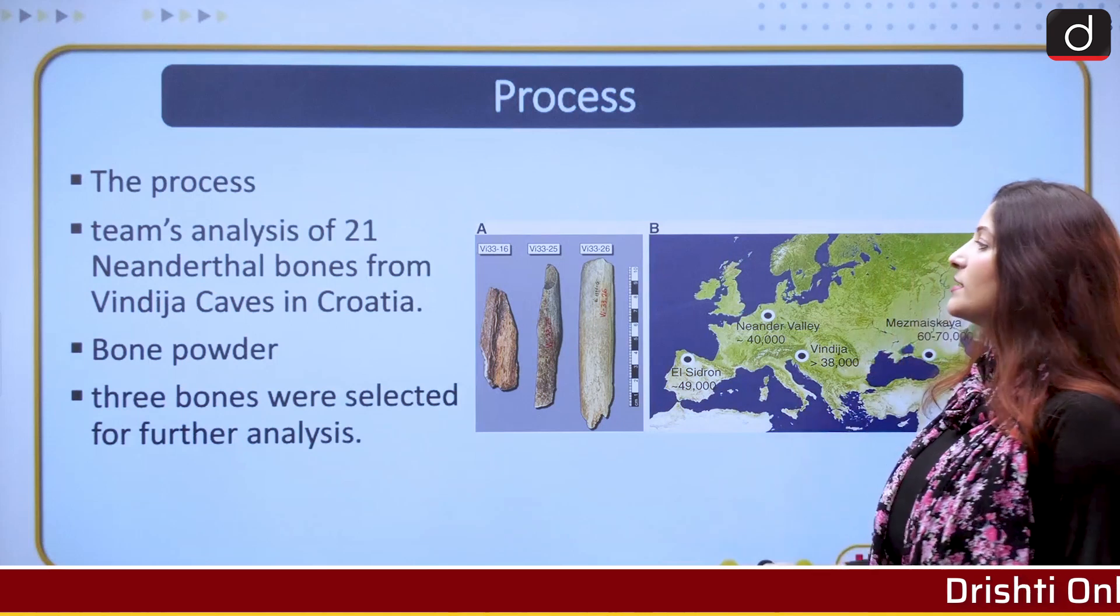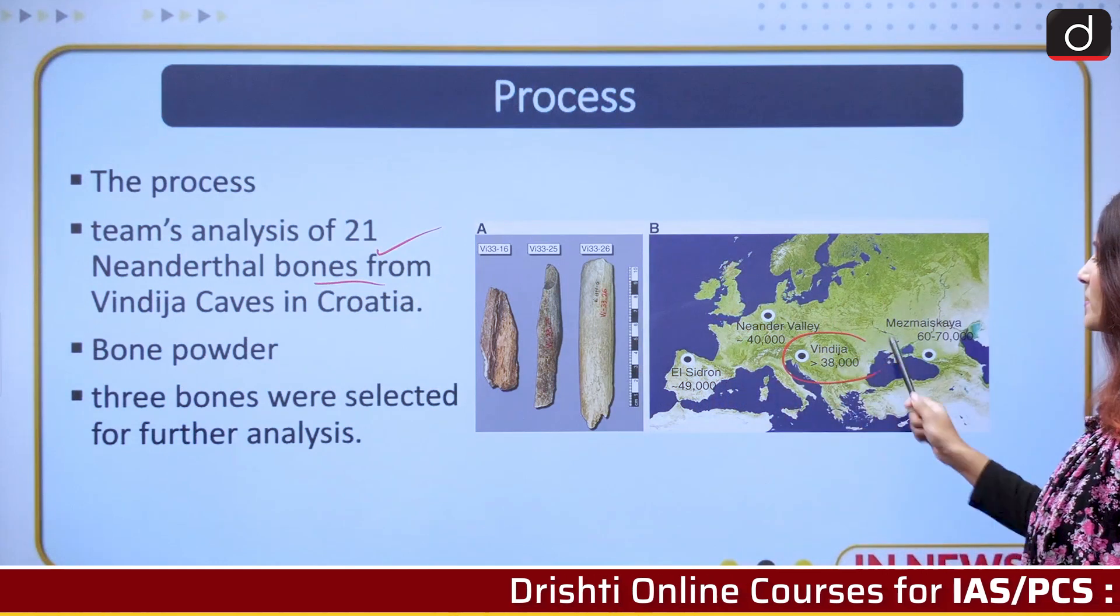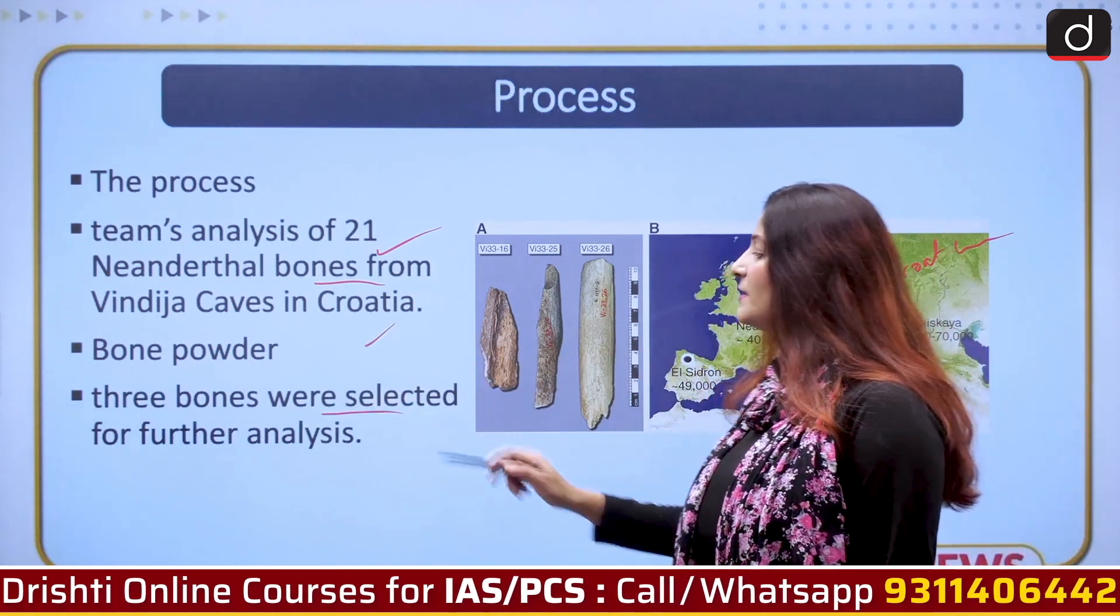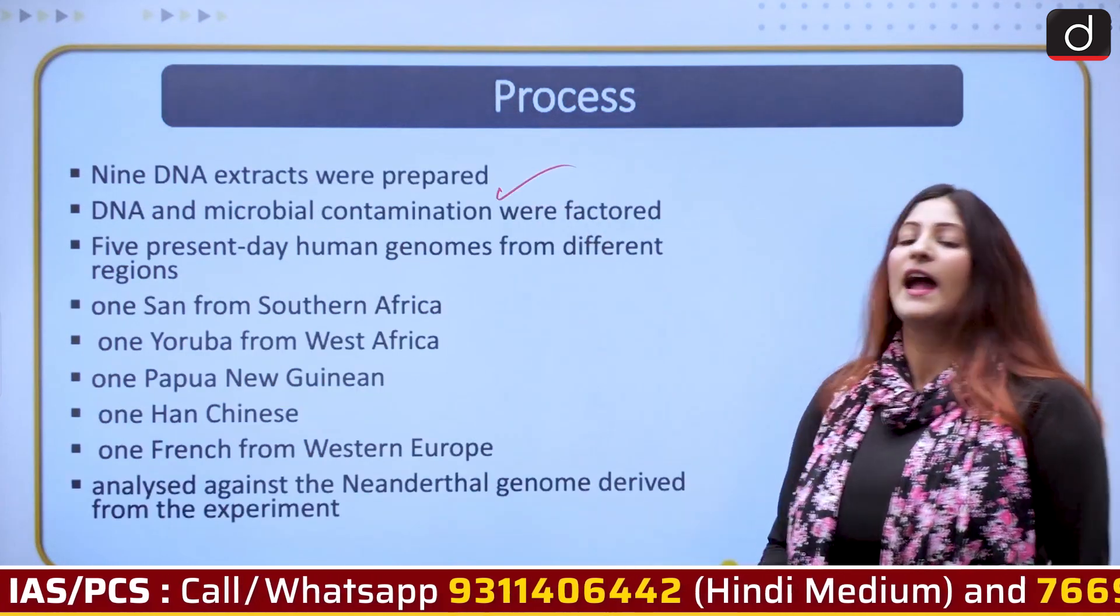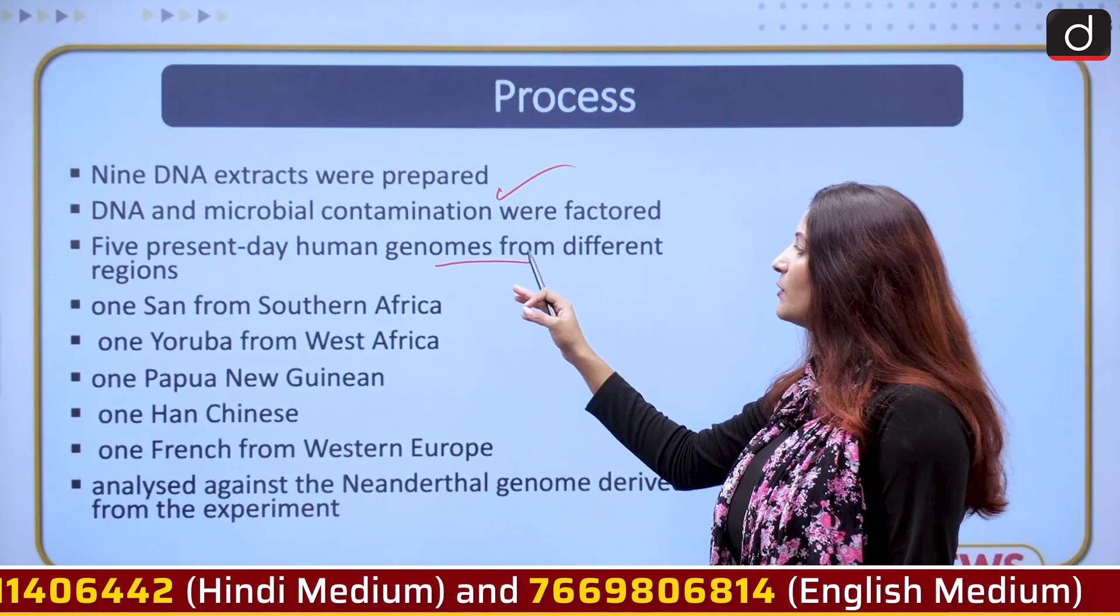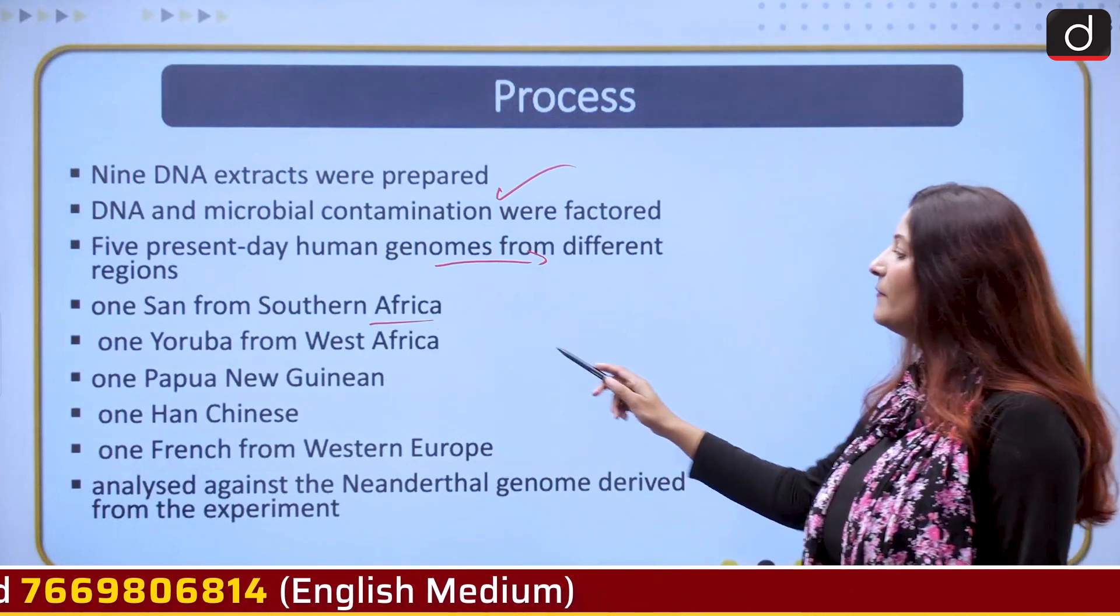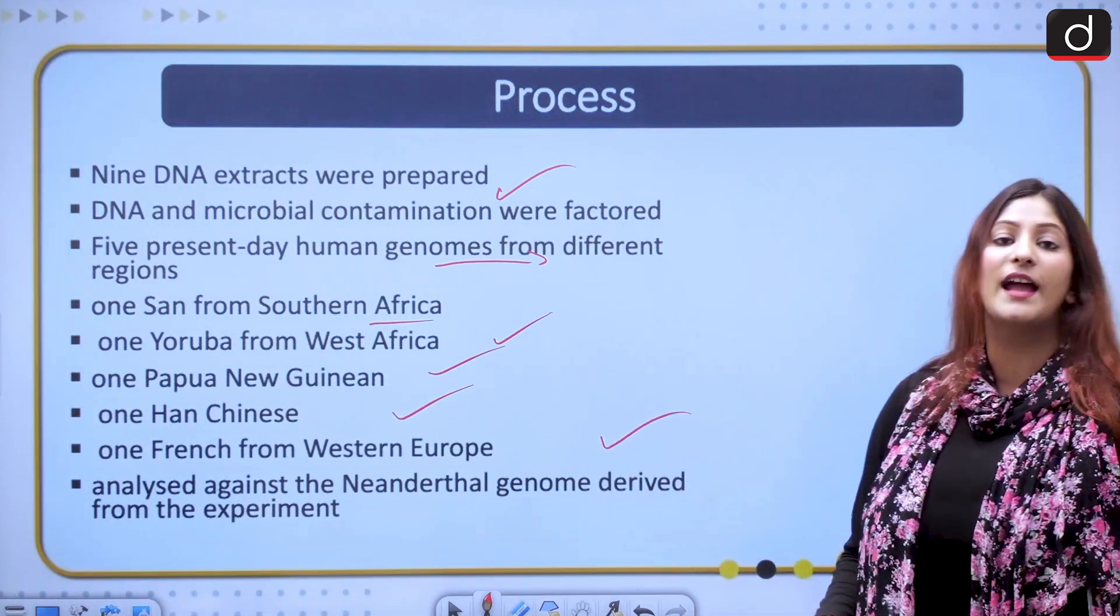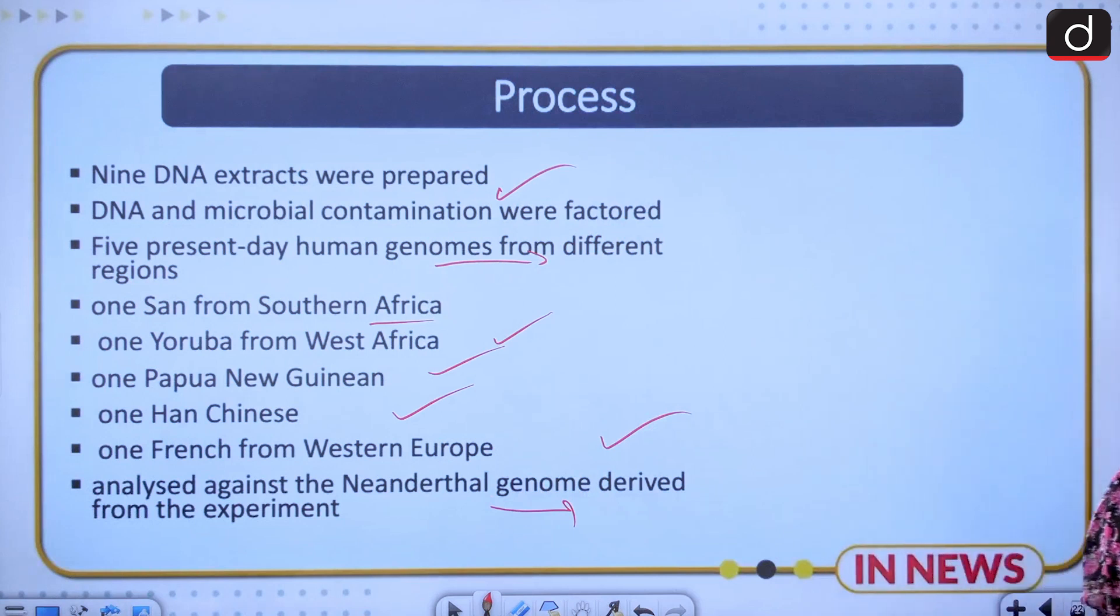Let us talk about the process. The team analyzed 21 Neanderthal bones from Vindija caves in Croatia. Bone powder was taken out and three bones were selected for further analysis. Nine DNA extracts were prepared and DNA and microbial contamination were ruled out. Five present-day human genomes from different regions were taken: one San from Southern Africa, one Yoruba from West Africa, one Papua New Guinean, one Han Chinese and one French from Western Europe. These were analyzed against Neanderthal genome derived from the experiment and hence it was concluded how similar or different they were.